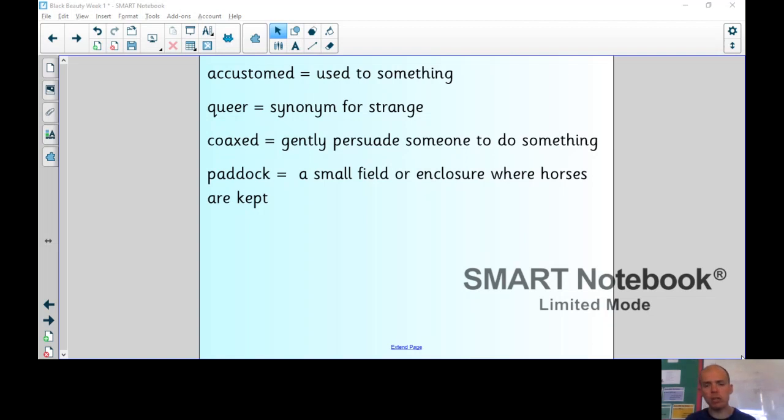And now, having got so far, my master went on to break me to harness. There were more new things to wear. First, a stiff heavy collar just on my neck, and a bridle with great side pieces against my eyes called blinkers. And blinkers indeed they were, for I could not see on either side, but only straight in front of me. Next, there was a small saddle with a nasty stiff strap that went right under my tail. That was the crupper. I hated the crupper. To have my long tail doubled up and poked through that strap was almost as bad as the bit. I never felt more like kicking, but of course I could not kick such a good master, and so in time I got used to everything. I could do my work as well as my mother.